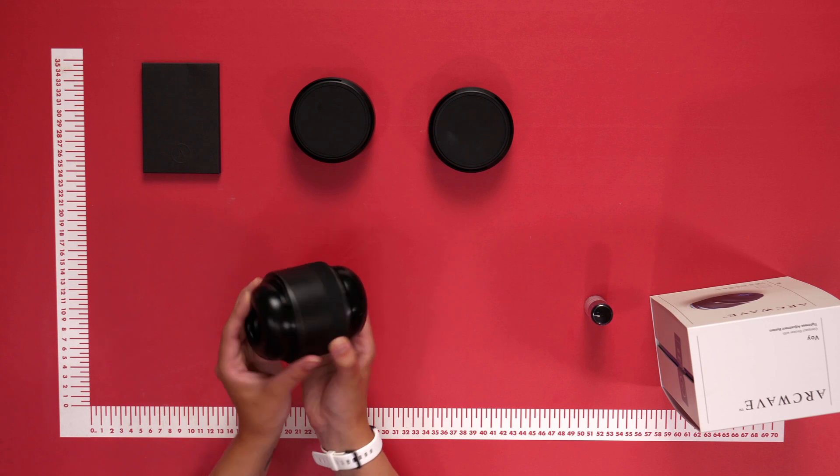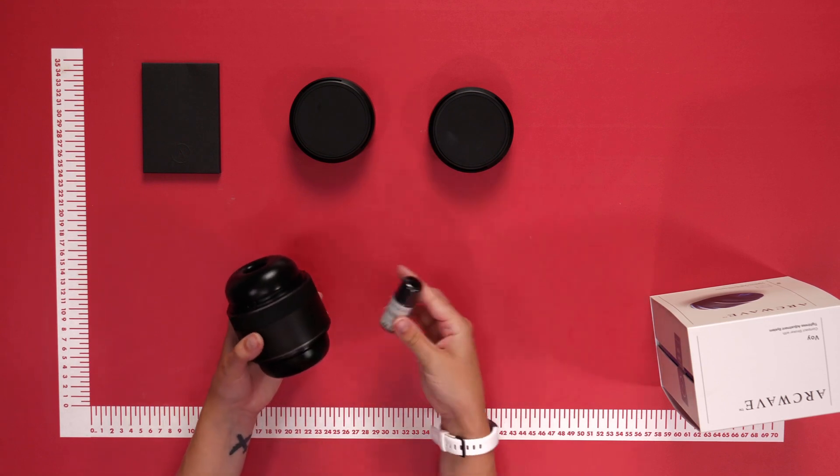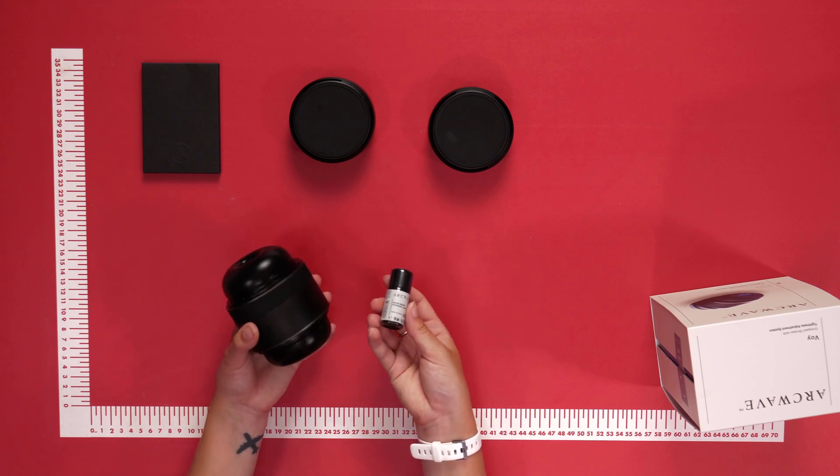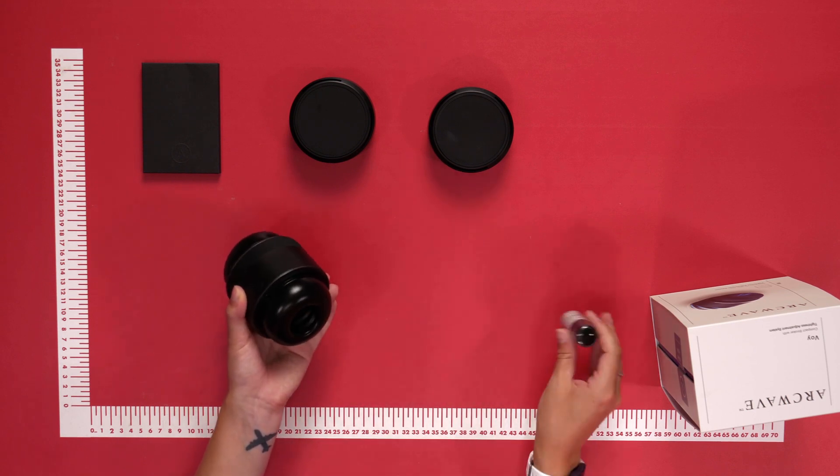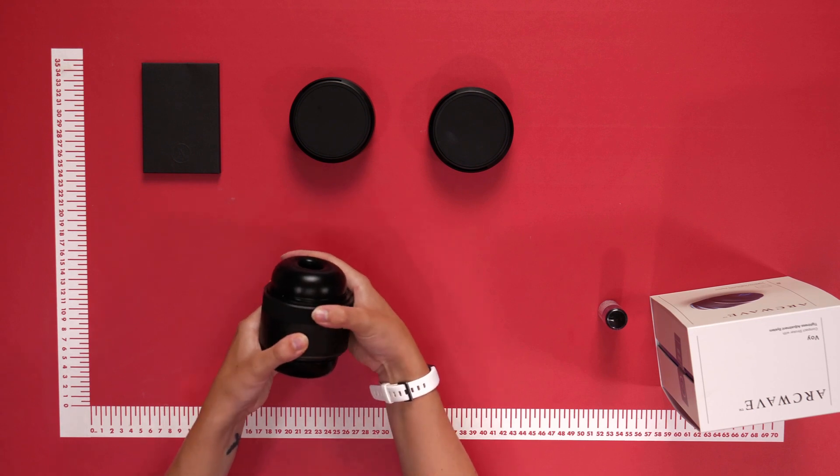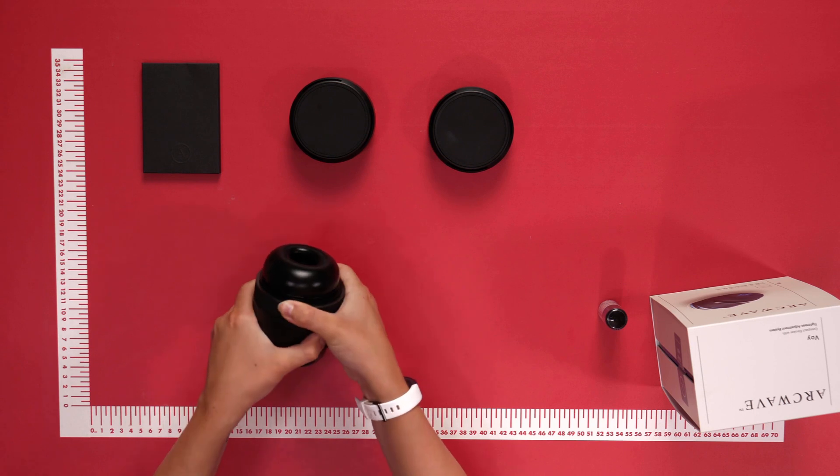Now to use, make sure both caps as mentioned are off. Also included is an Arcwave water-based personal lubricant. We'd recommend applying some water-based lubricant inside the interior of the sleeve and on your penis as well for the best experience. Then, using the tightness adjustment system, enjoy lots of fun with tightening pressure.